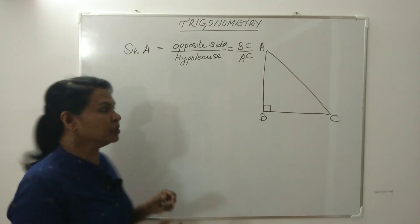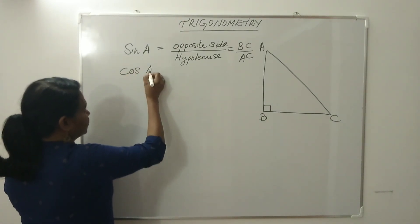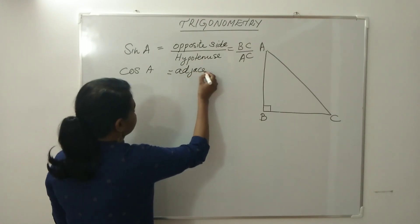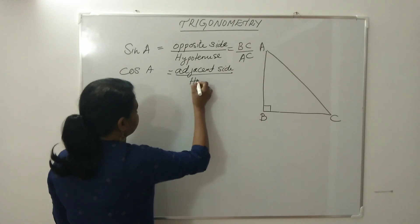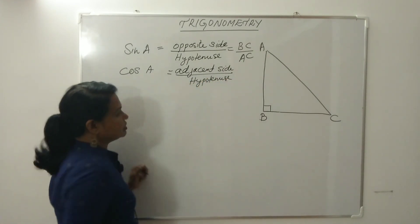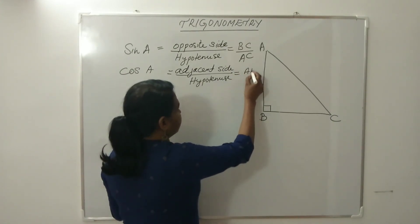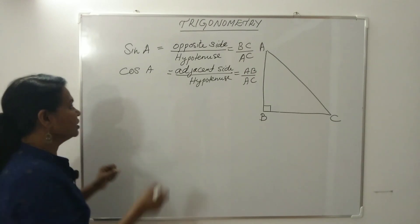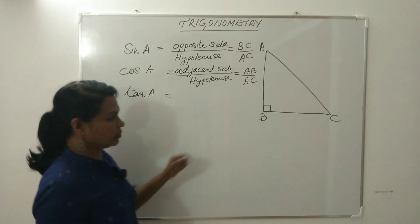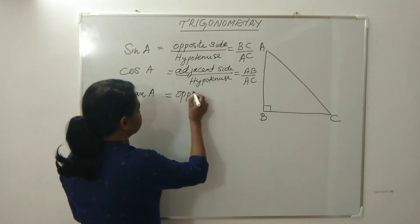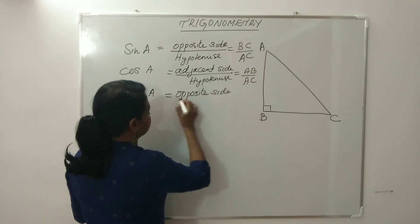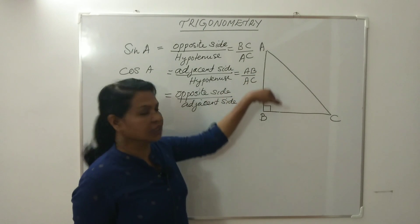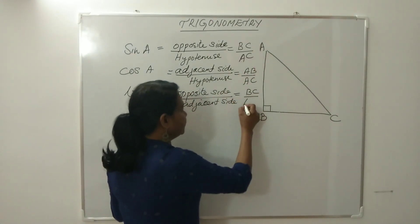Next is cosine — the short form is cos. Cos A equals adjacent side divided by hypotenuse. The adjacent side of angle A is AB, and the hypotenuse is AC, so cos A equals AB divided by AC. Next is tangent — short form is tan. Tan A equals opposite side divided by adjacent side, that is BC divided by AB.